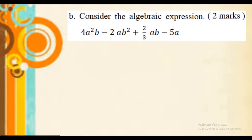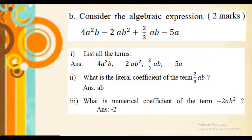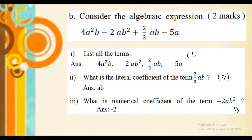Consider the given algebraic expression and answer the following: list all the terms, carrying 1 mark; identify the literal coefficient of the term 2 by 3 ab, carrying half a mark; and identify the numerical coefficient of the term minus 2ab square, carrying half a mark. This question carries 2 marks in total.